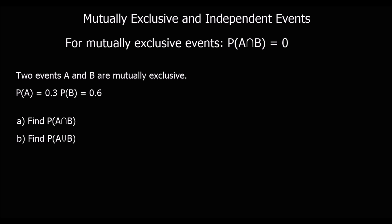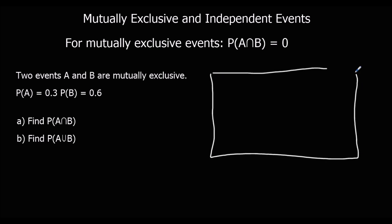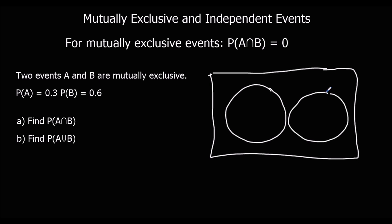Now mutually exclusive events. Mutually exclusive events cannot happen at the same time, so P(A and B) equals 0 — there's no chance of them both happening at the same time. So if the probability of A is 0.3 and the probability of B is 0.6, the Venn diagram for mutually exclusive events actually looks like this — there's no overlap, because there is no chance of them happening at the same time. So we've got 0.3, 0.6, and the outside is 0.1.